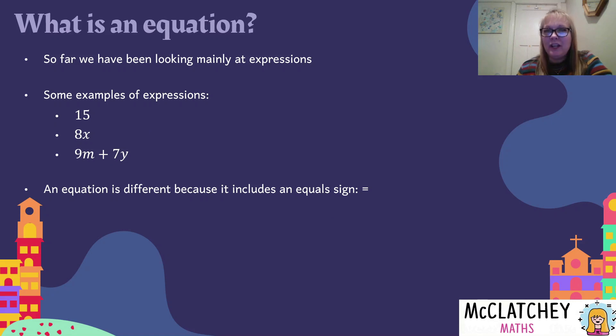So firstly, what is an equation? Well, so far we've been mainly looking at expressions, and here's some examples of some expressions we've talked about. Whole numbers by themselves, letters with numbers combined, different terms added together. And an equation is different to those because it includes an equal sign. So remember an expression has no equal sign, but an equation does.